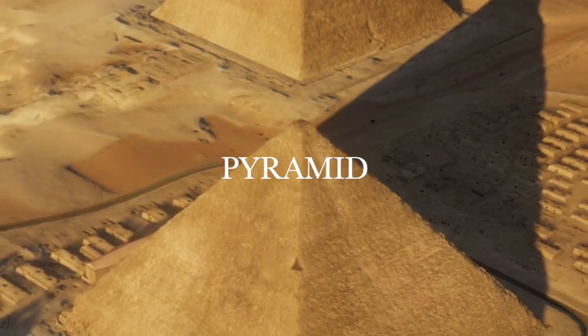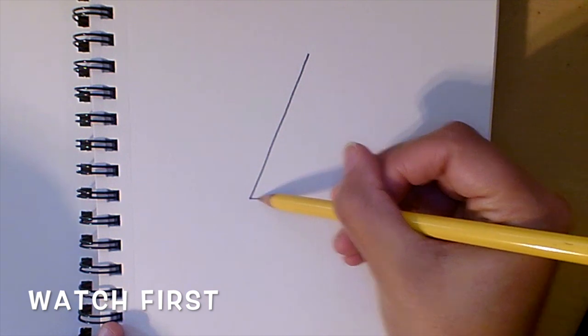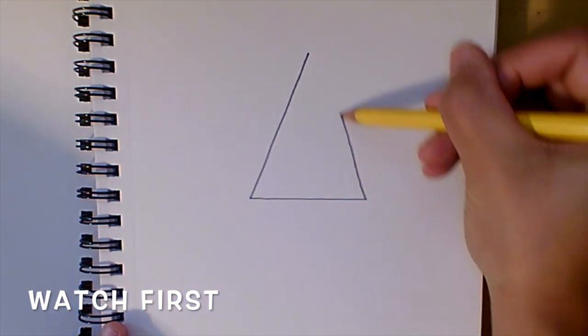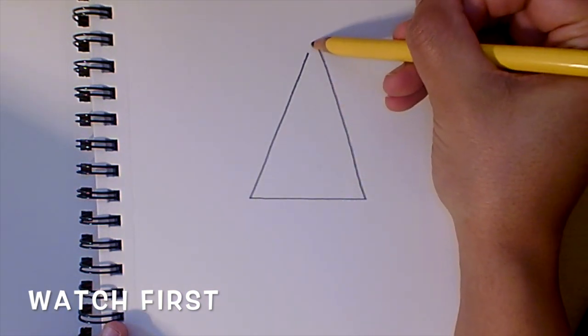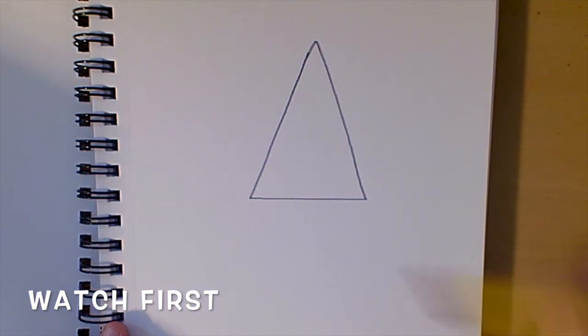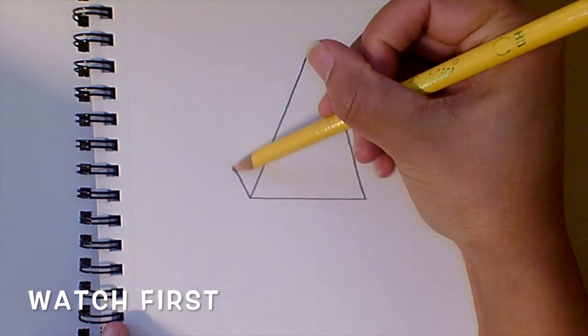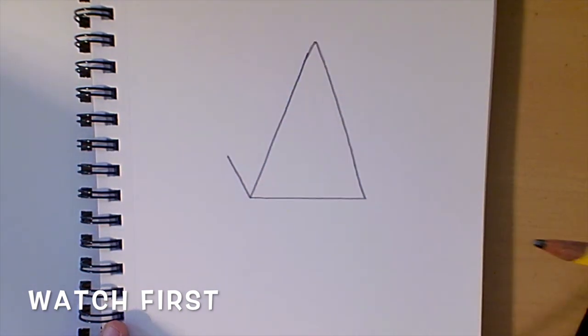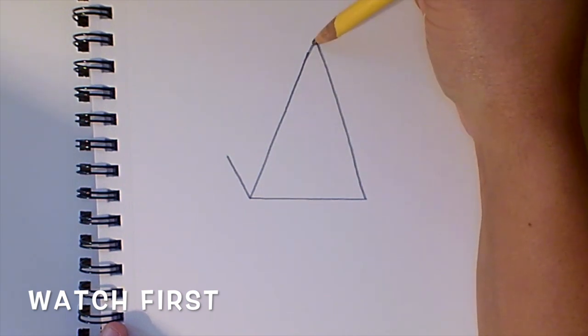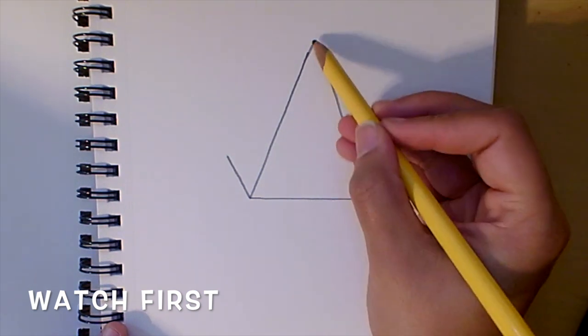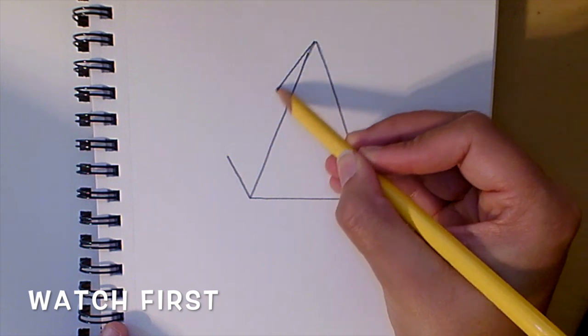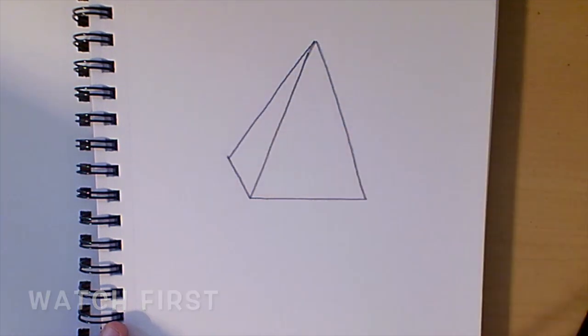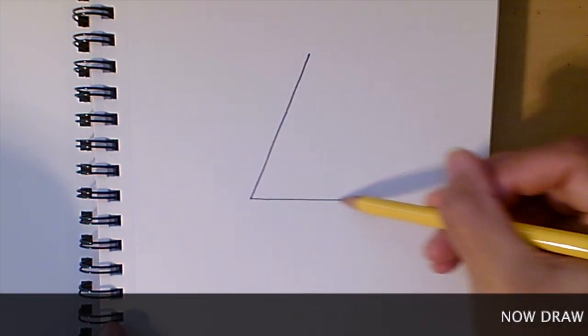Pyramid. To make a pyramid, start with an angle line and a horizontal line to make a triangle. Next, create a diagonal straight line at the bottom and connect the top down to the end of that line. Now, draw your own pyramid.